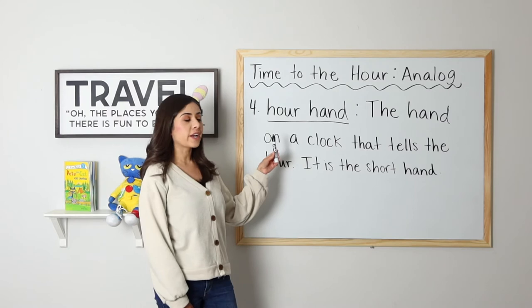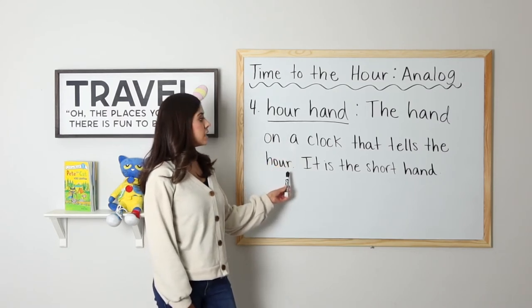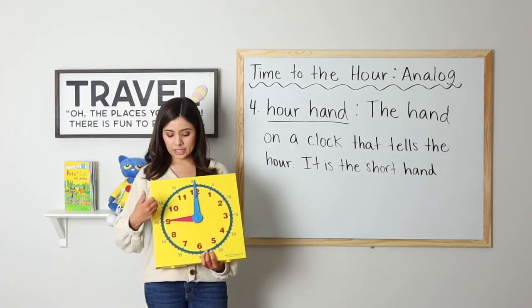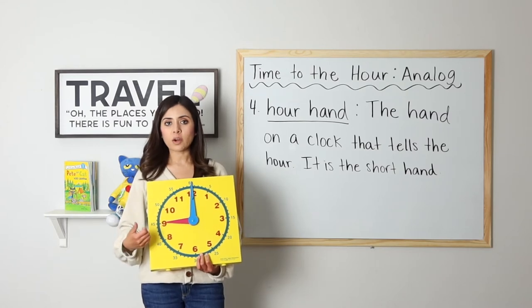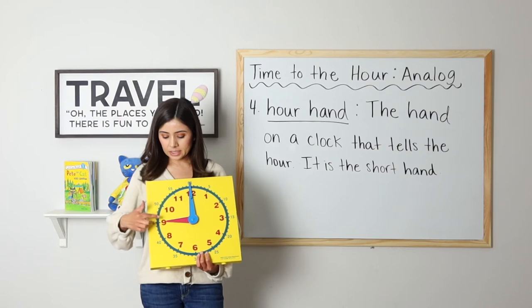Number four, hour hand. The hour hand is the hand on a clock that tells the hour. It is the short hand. So as we said, the short hand is the hour hand. It points to the hour. Right now it is pointing at nine, so the hour is nine.